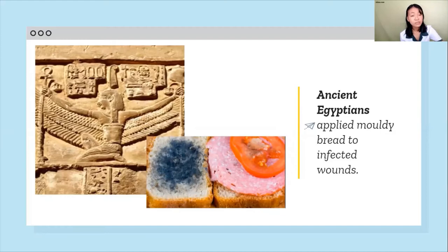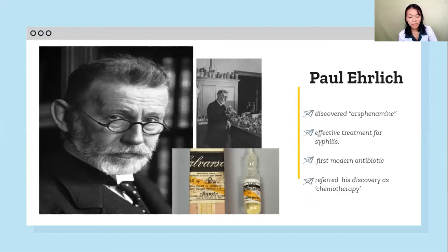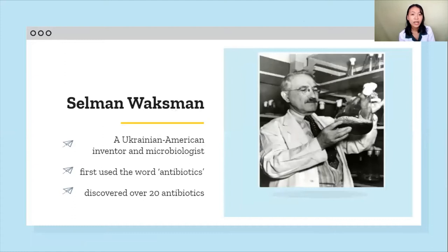It wasn't until the late 19th century that scientists began to observe antibacterial chemicals in action. Paul Ehrlich, a German physician, noted that certain chemical dyes colored some bacterial cells but not others. He concluded that it must be possible to create substances that can kill certain bacteria selectively without harming other cells. In 1909, he discovered that a chemical called arsphenamine was an effective treatment for syphilis — becoming the first modern antibiotic, although Ehrlich himself referred to his discovery as chemotherapy. The word 'antibiotics' was first used over 30 years later by Ukrainian-American microbiologist Selman Waksman, who discovered over 20 antibiotics in his lifetime.